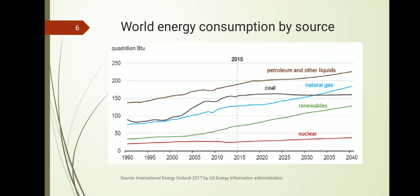Meanwhile, petrol and other liquids are slightly increasing. The positive prediction is that power production from renewables will very sharply increase — the green line in the graph shows a sharp upward trend after 2015. Nuclear energy production is predicted to remain almost constant. So the main prediction from this graph is that production from renewables will sharply increase.